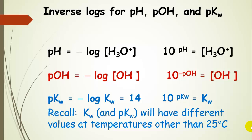Sometimes you have the pH and want the hydronium ion concentration. We calculate pH by taking the negative log of the hydronium ion concentration, so if we take the inverse log — 10 to the negative pH — we get the hydronium ion concentration. We can do the same with pOH: take the negative log of the hydroxide ion concentration to get pOH, or take 10 to the negative pOH to get the hydroxide ion concentration.